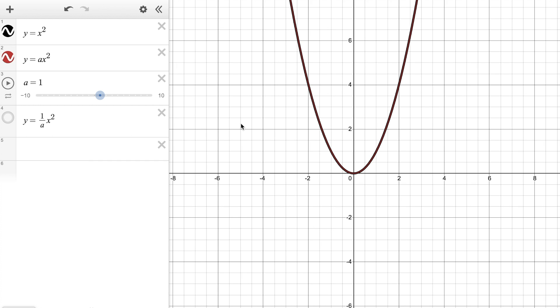If the a value is greater than one we see a vertical stretch by a factor of that a value. If the coefficient in front of x squared is in between zero and one we say that there's a vertical compression by a factor of whatever the denominator is. And lastly if the a value is negative we say that there's a reflection over the x-axis.